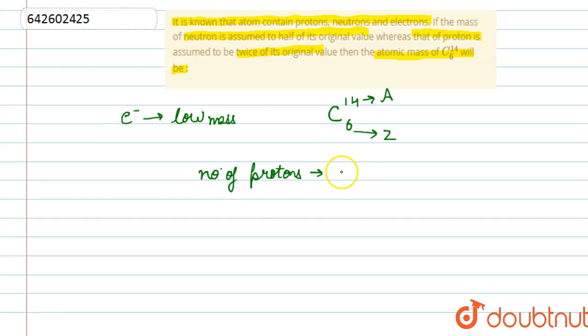And we know number of neutrons are mass number minus atomic number that is A minus Z. In this case is 14 minus 6, that is equals to 8.